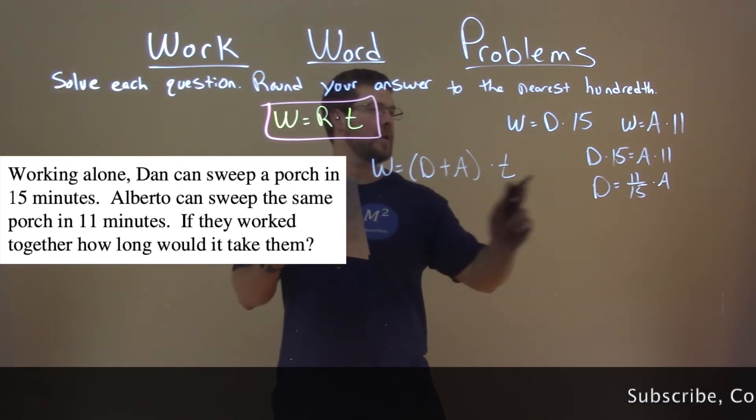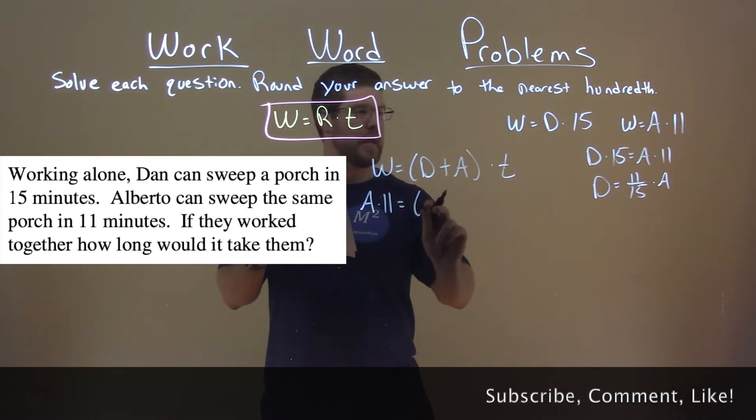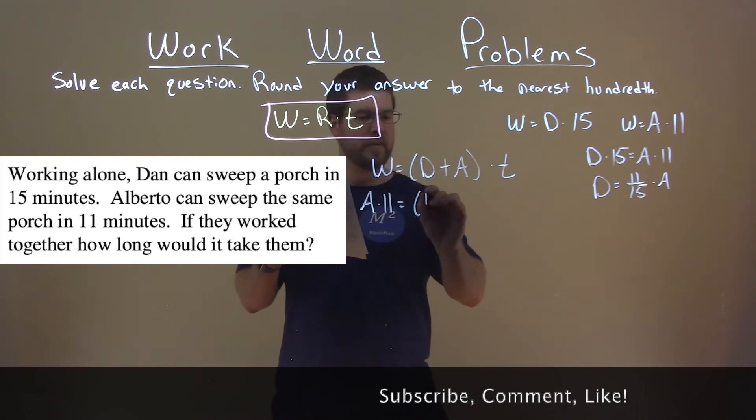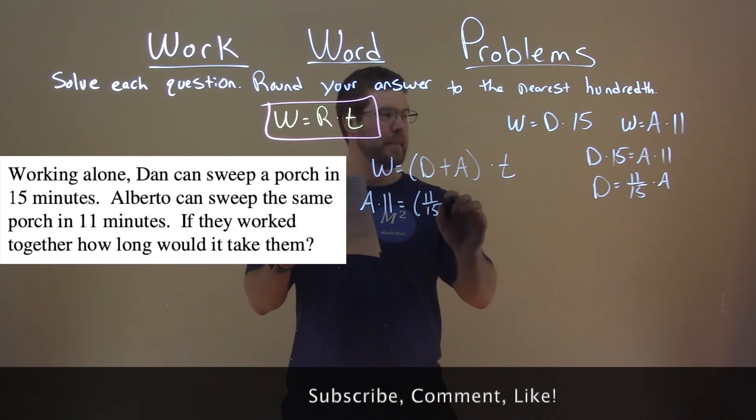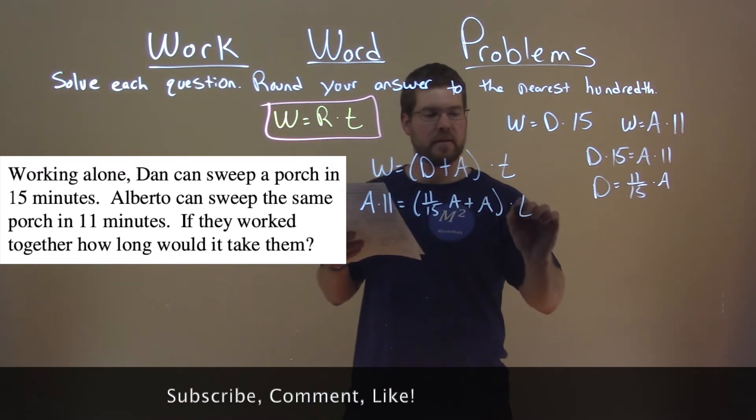Well, W, we know is A times 11. And Dan, we have in terms of A, which is 11 over 15 A, plus another A, times our time.